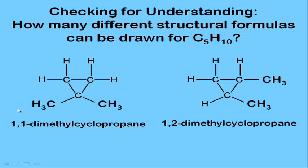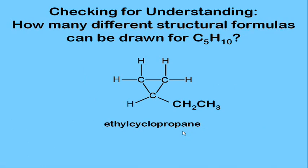If the two methyl groups are on the same carbon, we call it 1,1-dimethylcyclopropane. If they are on adjacent carbons, it's 1,2-dimethylcyclopropane. Finally, you could have a cyclopropane with a two-carbon branch — an ethyl group — giving ethylcyclopropane.